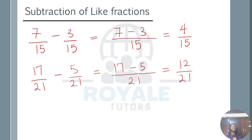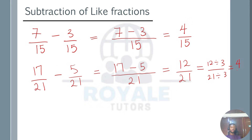Remember, 12 over 21 can still be reduced further. As we can see, 12 is divisible by 3 and 21 is also divisible by 3. We can reduce the fraction by dividing both by 3: 12 divided by 3 is 4, and 21 divided by 3 is 7. So our final answer is 4 over 7. We'll do this more in our next video.